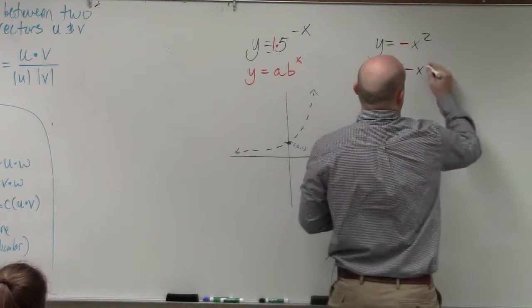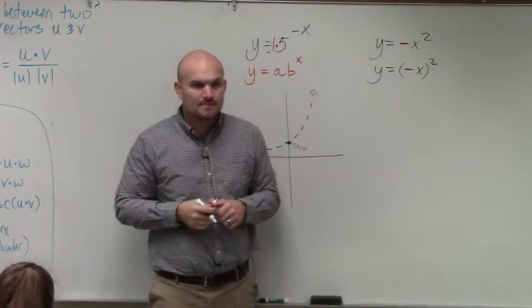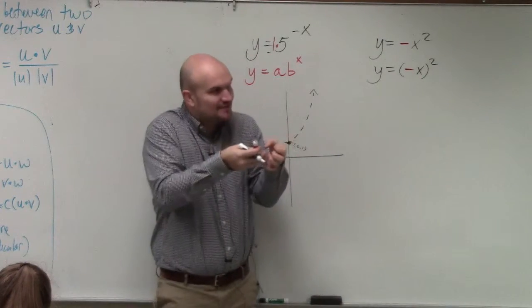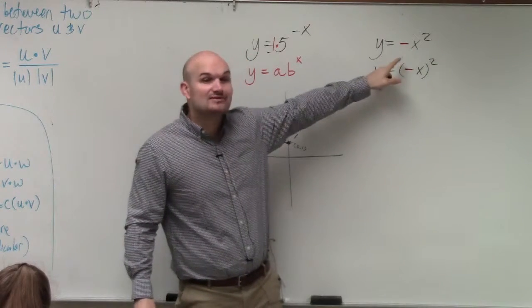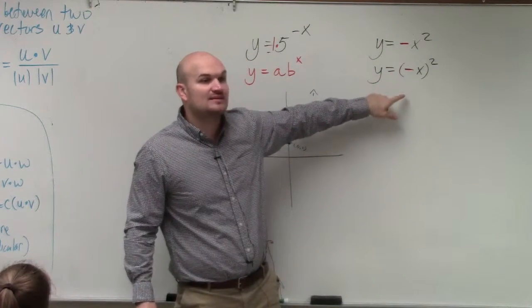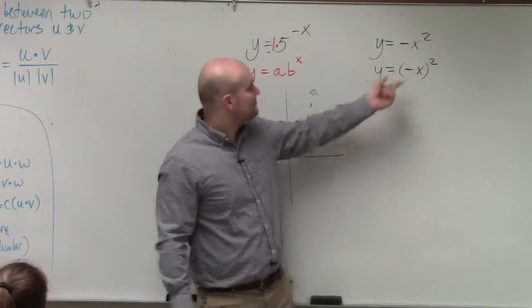It's inside of the function. Does everybody see that? That's inside of the function. That's what's being squared. So if multiplying by a negative outside reflects over the x-axis, multiplying by a negative inside reflect about the y-axis.